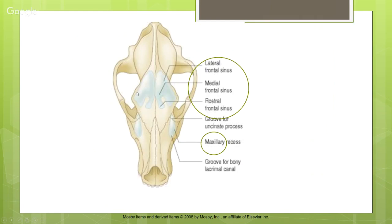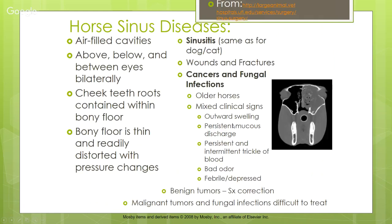The maxillary sinus is very close to the tooth root — if we have an infected tooth root, bacteria can eat through the thin bone and enter the sinus. From the sinus it's very close to the orbital cavity, and infection can eat through there too, causing discharge in the eye as well.